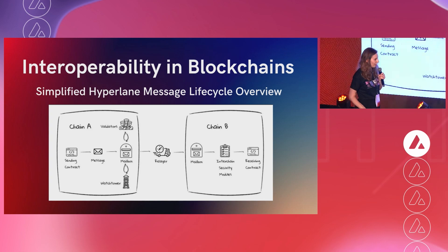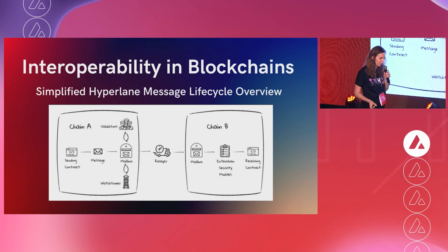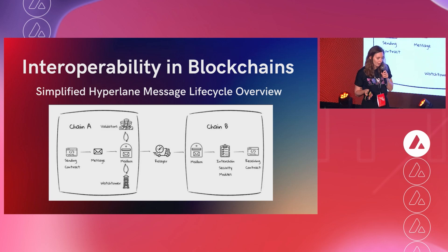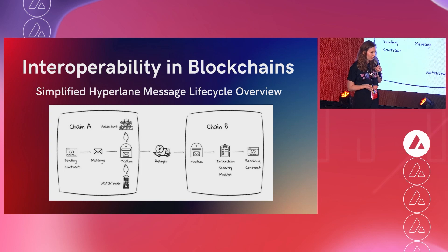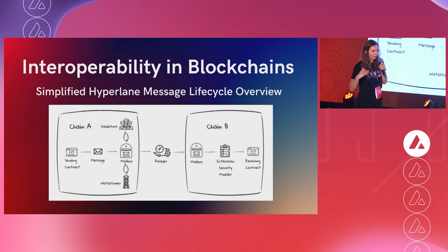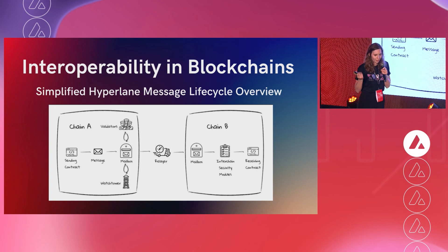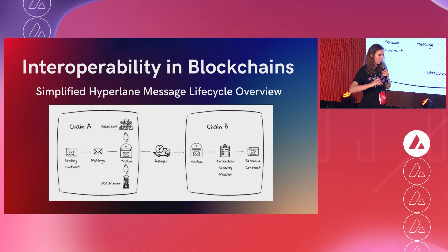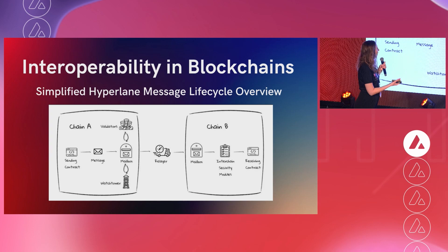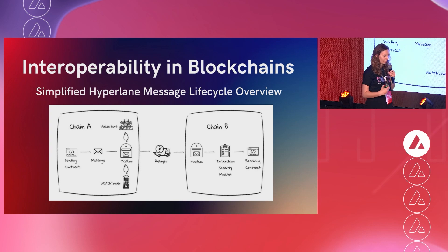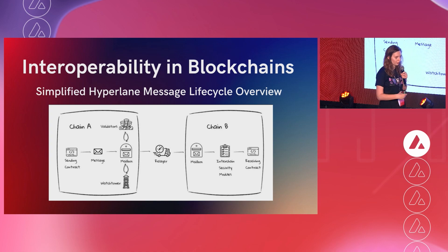At Hyperlane, we build messaging protocol using a mailbox system. The mailbox system works very similarly to sending a letter in real life — you have a letter you want to send to a friend, so you put it in the mailbox. Then the post office, which we call the relayer, along with other contracts, passes the message itself to chain B.